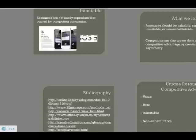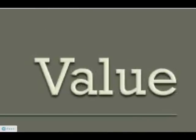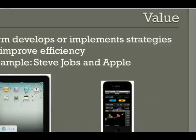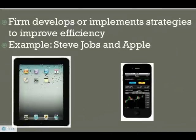The first characteristic is value — when a firm is able to develop or implement strategies that will improve its effectiveness and efficiency. One example of a valuable resource would be a company's branding. Apple, for instance, has customers that are much more likely to be repeat customers, due to the brand loyalty they have achieved over the years through sales of their Macintosh PCs and the iPhone and iPod products.